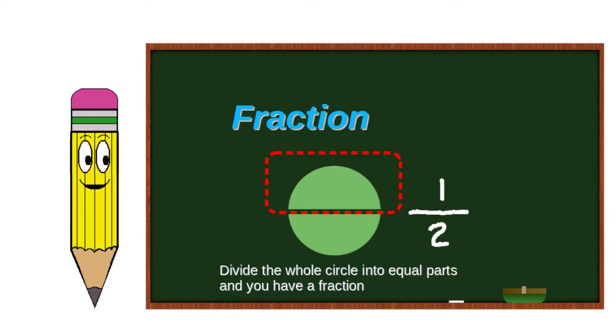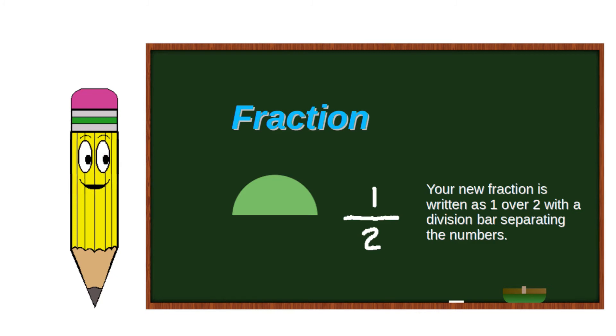Divide the whole circle into equal parts and you have a fraction. Your new fraction is written as 1 over 2, with a division bar separating the numbers.